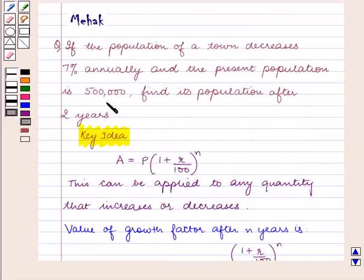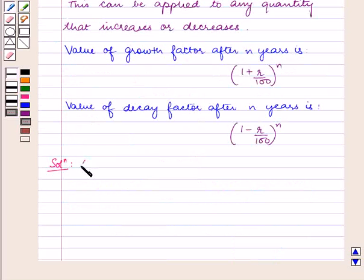According to the question the population of a town is 500,000 and it decreases 7% annually where we have to find the population after 2 years. Let us let the present population be P.